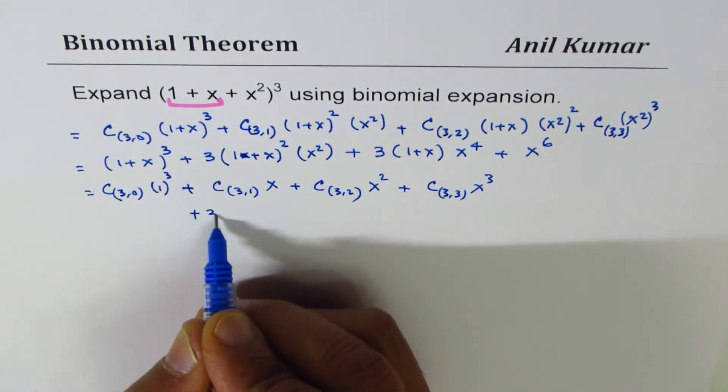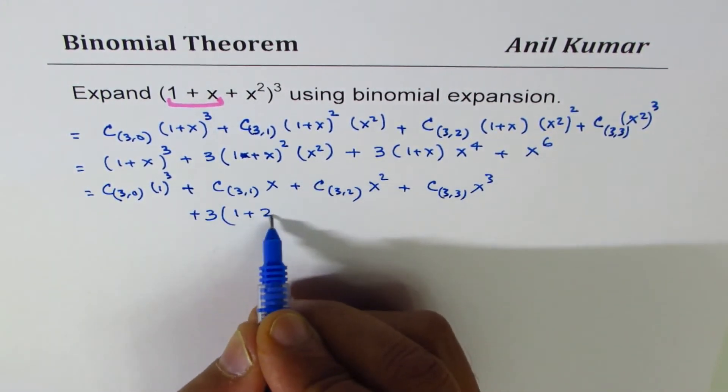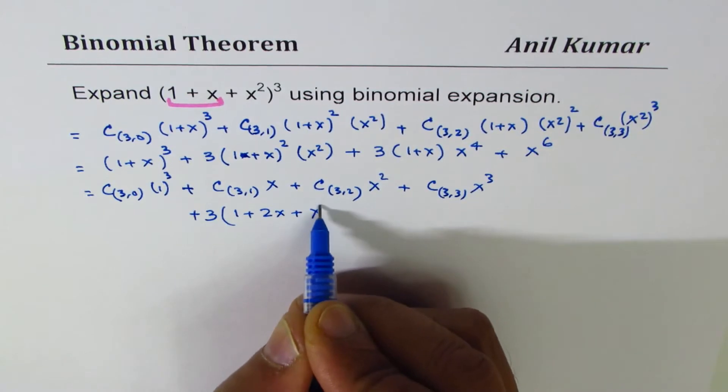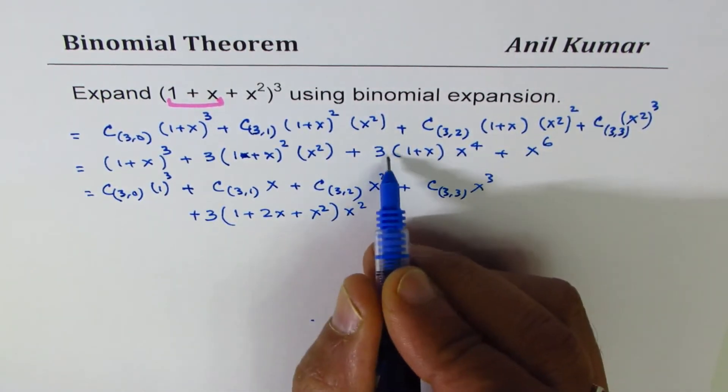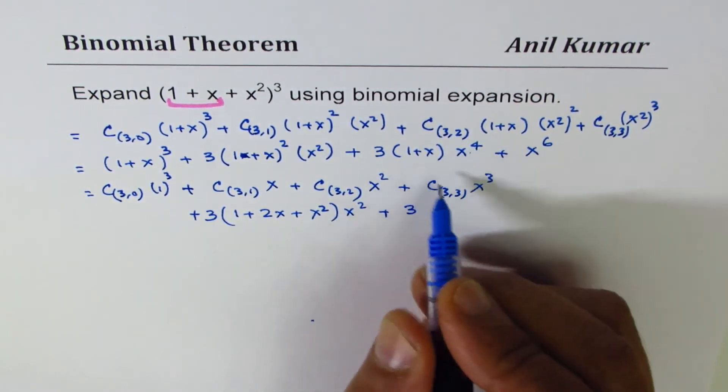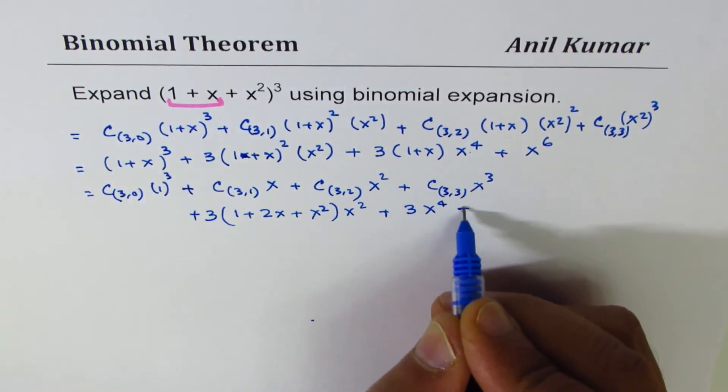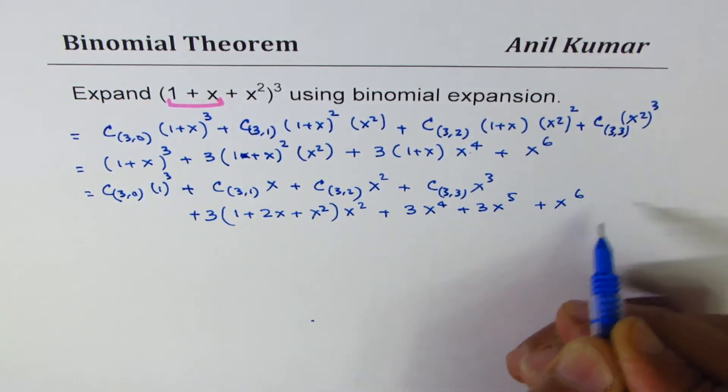Let's rewrite the second term as 3(1 + x)² which is (1 + 2x + x²)(x²), plus here we can expand this so what we get is 3x⁴ + 3x⁵ + x⁶.